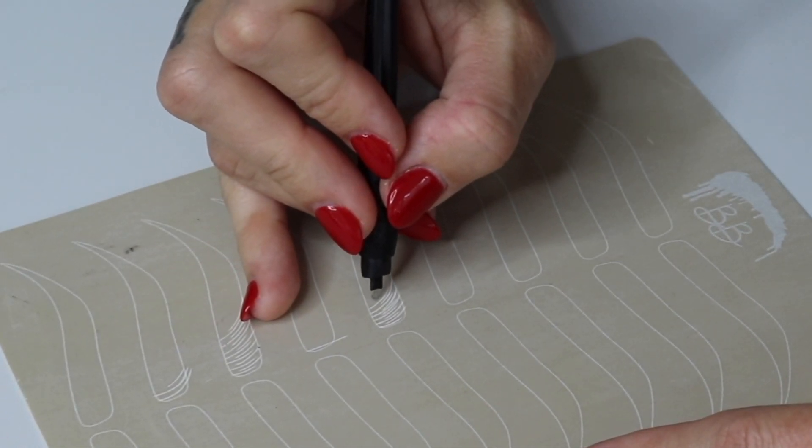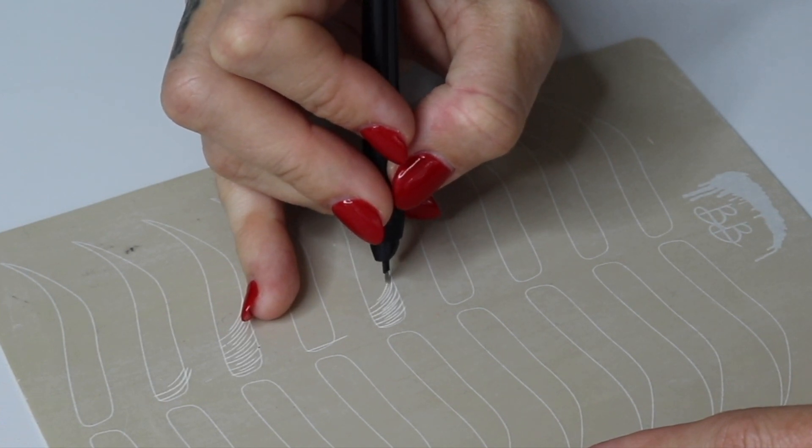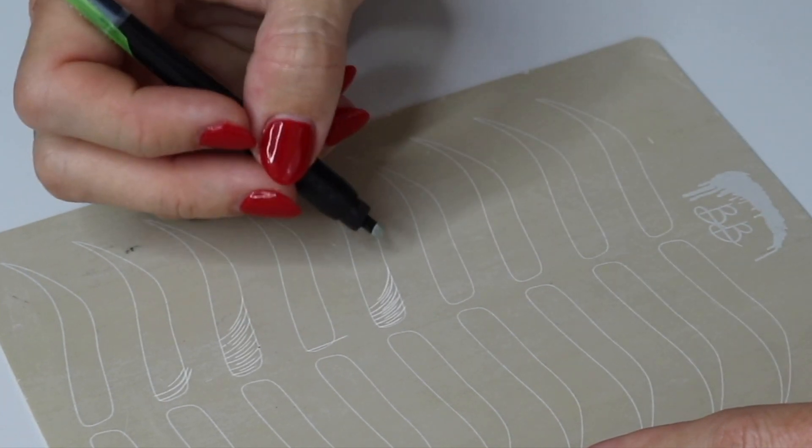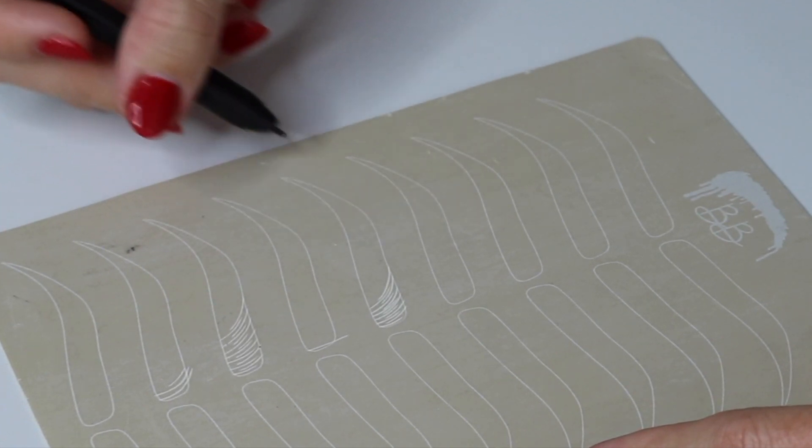So like I said in the beginning of the brow or at the head of the brow it's moving up and over and as you get to the tail it's moving over and down or over and out.